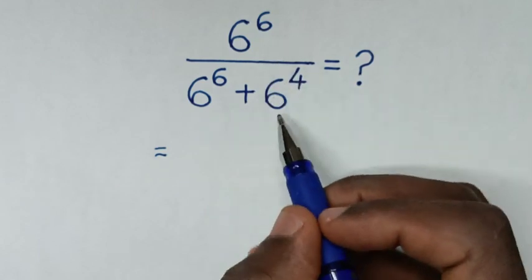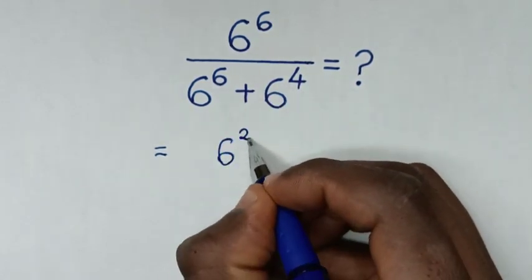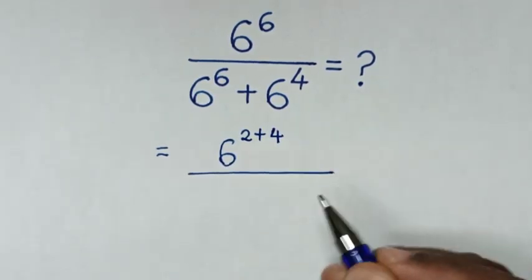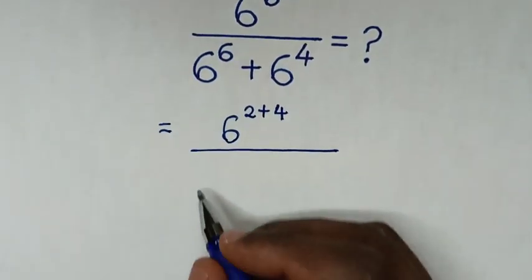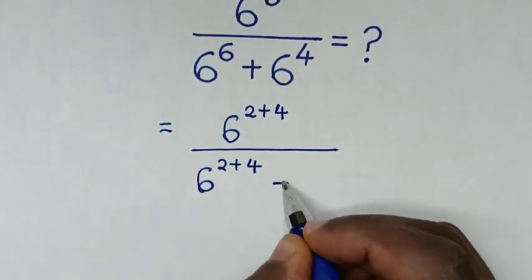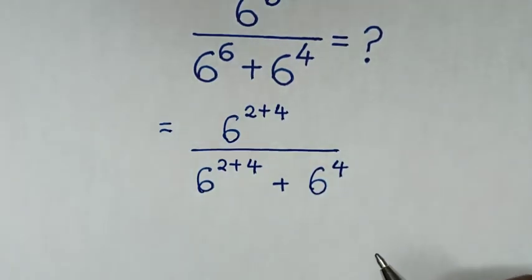From this 6 power 6, we have common 6 power 4. This is the same as 6 power 2 plus 4, then over 6 power 6, which is the same as 6 power 2 plus 4, then plus this 6 power 4.